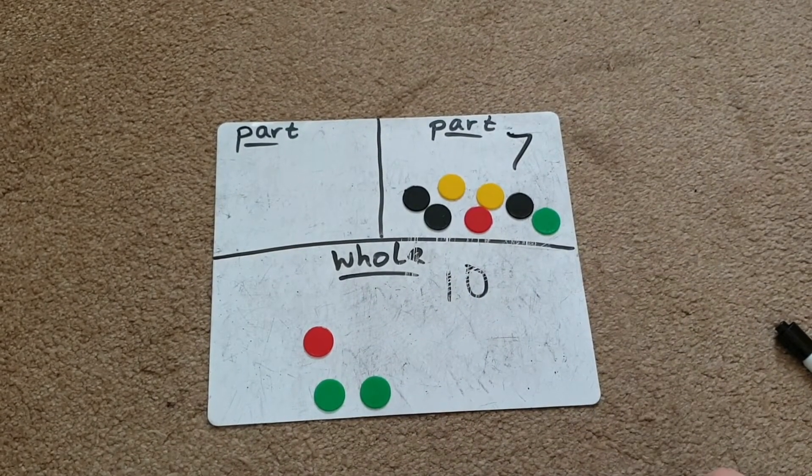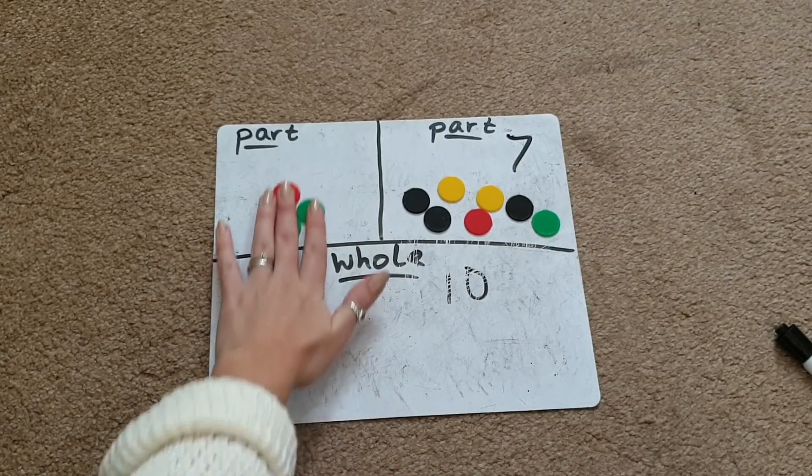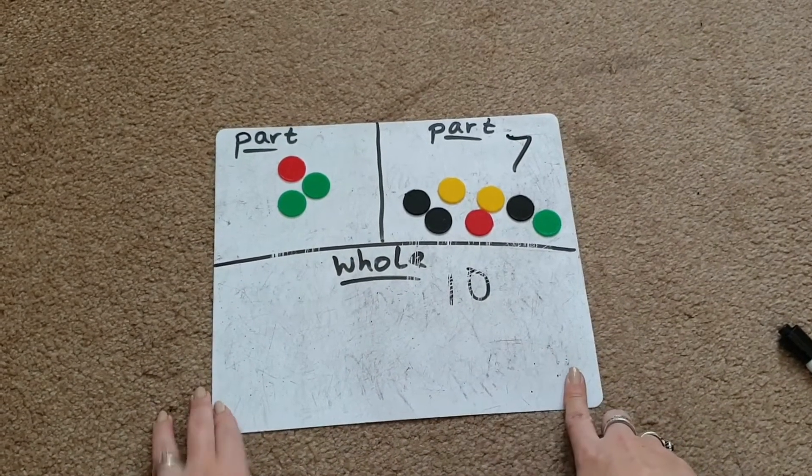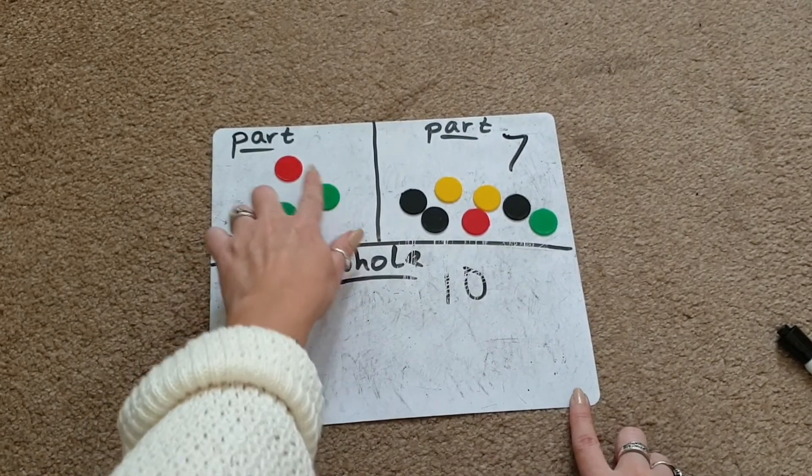Then I would ask the children to slide these 3 objects up to this part. There we go. Then count how many they have in this part: 1, 2, 3.